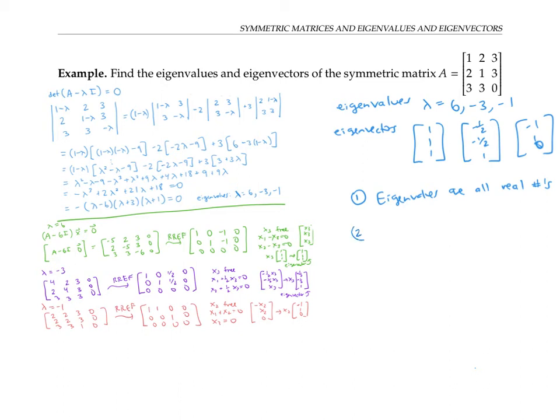The second thing that I want to point out is that all these eigenvectors are orthogonal. Let me give them names: V one, V two, and V three. And now if I take V one dot V two, I get zero. V one dot V three is zero. This is no coincidence. In fact, this is true for any two eigenvectors of distinct eigenvalues for a symmetric matrix.